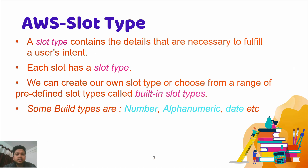So the main thing is: what is slot type? This is basically a definition that I got from its official website. The slot type contains the details that are necessary to fulfill a user intent. This line is simply showing that the slot type is basically used to fulfill the intent — that means the intent should be covered.